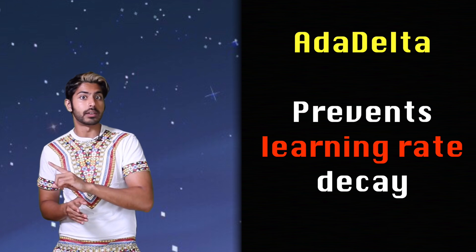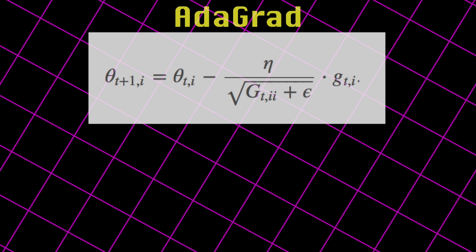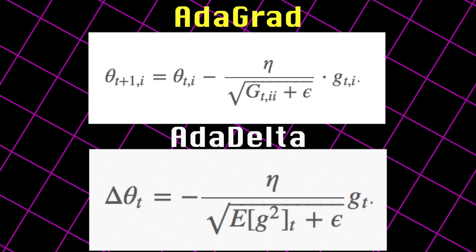AdaDelta was invented to solve this. In AdaGrad, we're constantly adding a square root to the sum causing the learning rate to decrease. So, instead of summing all the past square roots, we restrict the window of accumulated past gradients to a fixed size. We define the sum of gradients as a decaying average of all past squared gradients instead of just stored previous squared gradients. So the running average at a time step depends only on the previous average and the current gradient.